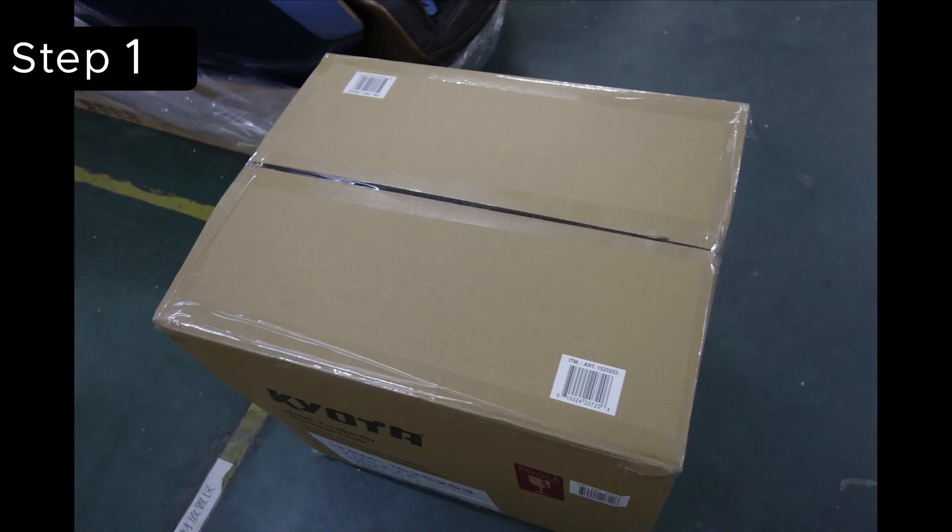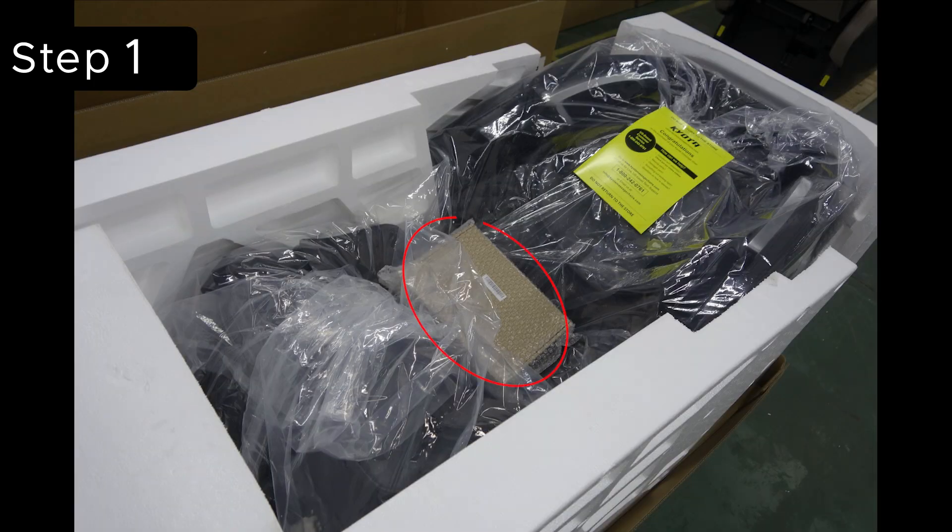Open all of these up and make sure that everything is undamaged from shipping. Starting with the largest of the three boxes, on the seat of the body of the chair is a smaller box. This is the accessory box. Remove this and set it aside for now. We will return to this later. Remove the outer shell and the foam padding. With the padding and the outer box removed, you can remove the chair from the tray.